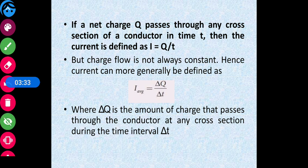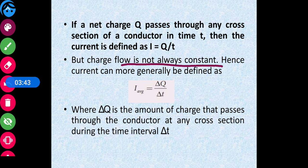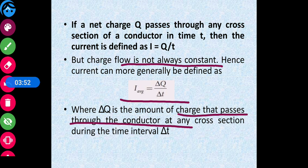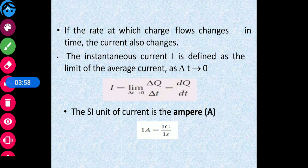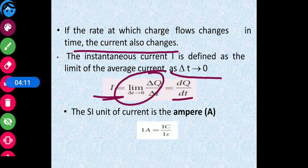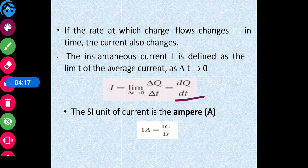If a net charge Q passes through any cross-sectional area in time T, then the current is defined as I = Q/T. Since charge does not always flow at a constant rate, we define the average current as I_avg = ΔQ/ΔT, where ΔQ is the amount of charge passing through any cross-section during time interval ΔT. The instantaneous value of current is I = dQ/dT, obtained as the limit when ΔT tends to zero.